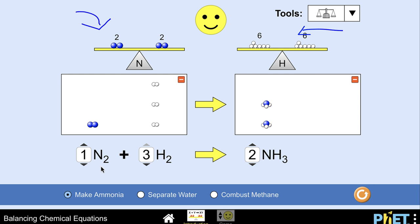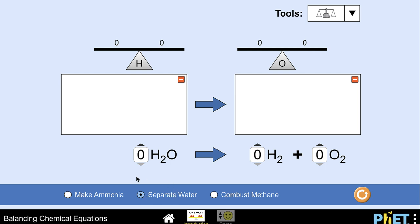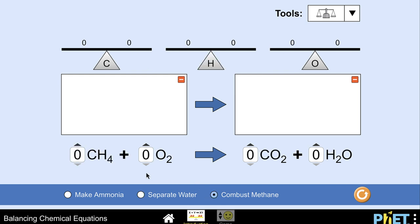One nitrogen molecule plus three hydrogen molecules gives us two molecules of ammonia and you can go through the practice to separate water and do that as well. Same kind of thing. Start off with a one on each and then adjust as you need to until you get everything balanced. And then there's finally one to combust methane. Once you've done those and get a little comfortable with it then we're going to look at the game.